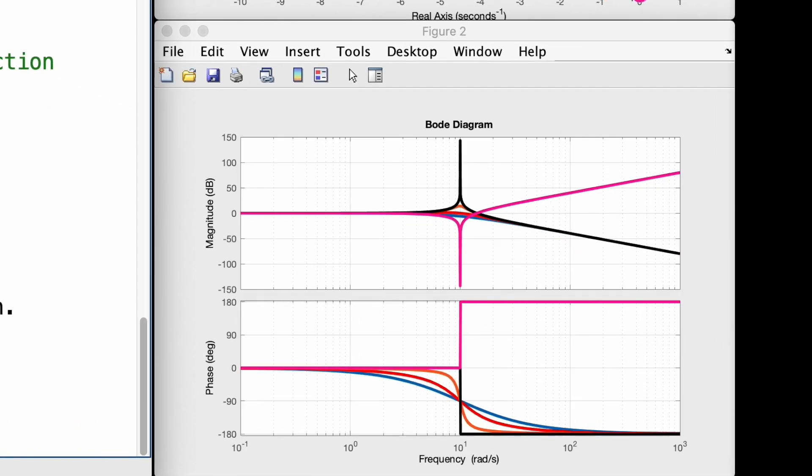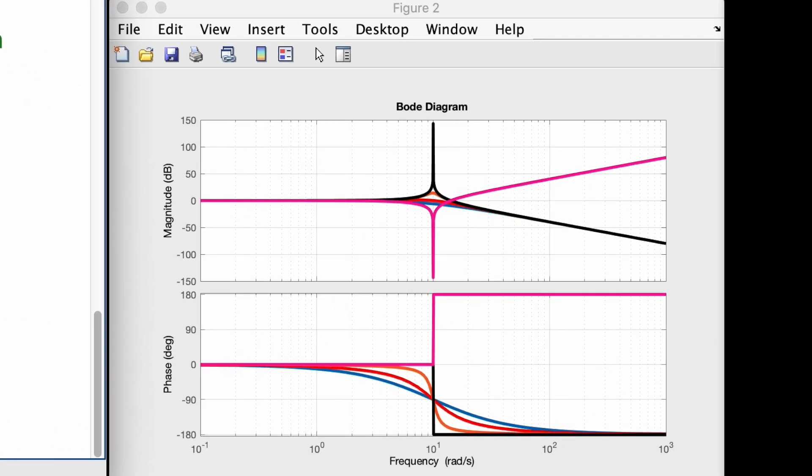And what's nice about this is that we can adjust the damping term in the numerator to affect the depth of the notch in the same way that we adjusted it to affect the height of the peak in the inverse function.